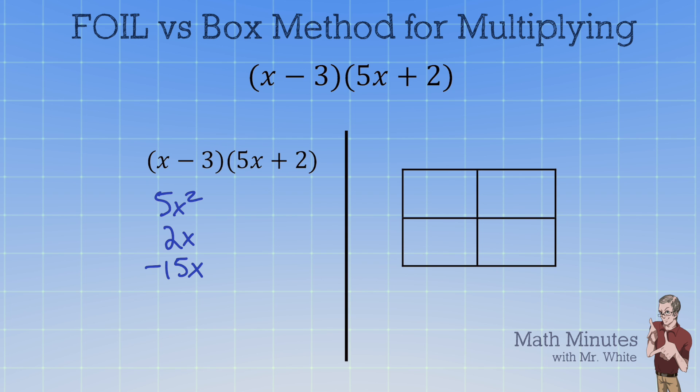We get -15x for the inside. And we get -6 when we multiply -3 times 2 for that L term in FOIL. Now note that these middle terms do combine. They become -13x. So we can write the answer 5x² - 13x - 6.